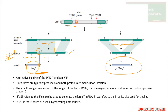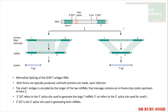SST refers to the splice site. The 5' SST is the 5' splice site used to generate the larger T mRNA; the small 5' SST is the 5' splice site for the small t mRNA. The 3' splice site is used in generating both mRNAs.